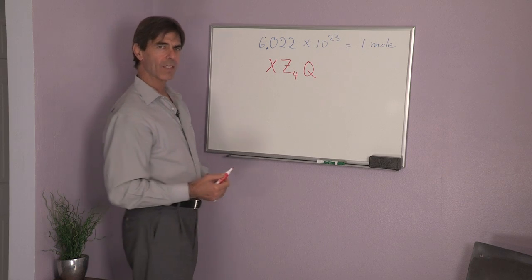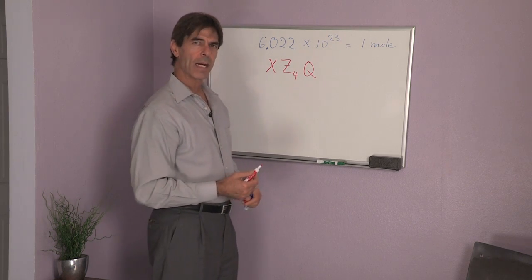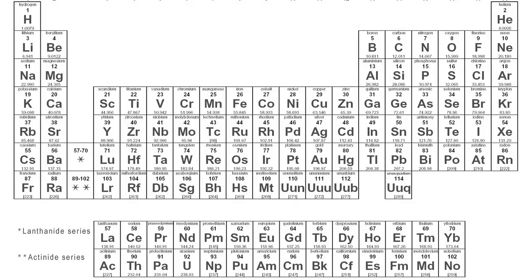So what we would have to do is look up in the periodic table how much mass is in a mole of X, how much mass is in a mole of Z, and how much mass is in a mole of Q.